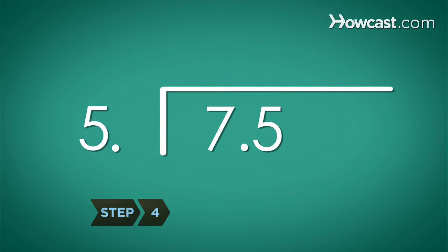Step 4. Place zeros to the right of the decimal point in any empty places created by moving the decimal place of the dividend.